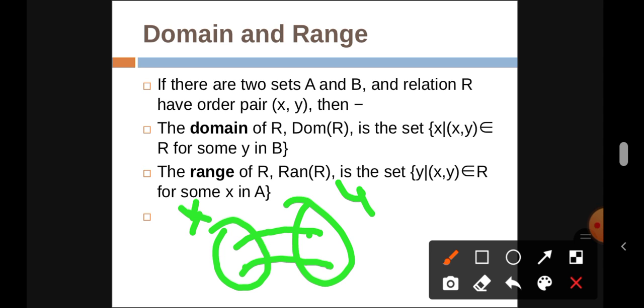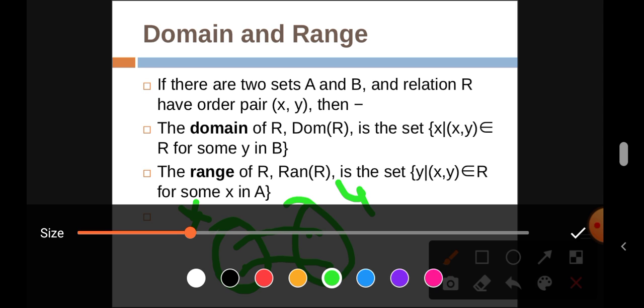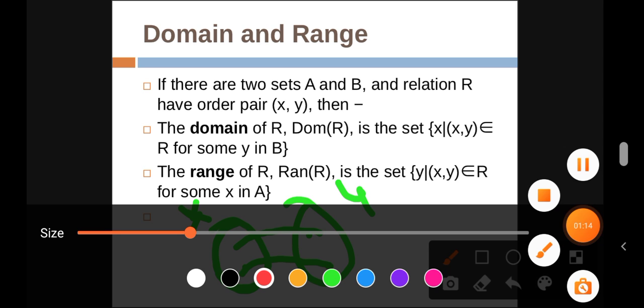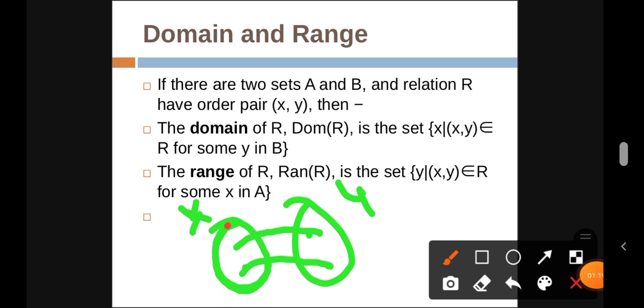Then the domain of R, Dom(R), is the set X. This set X in (x,y)∈R for some y in B. This is called domain. And range of R, Ran(R), is the set of y such that (x,y)∈R for some x in A.